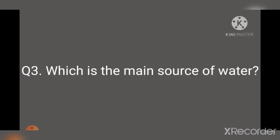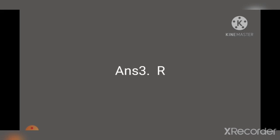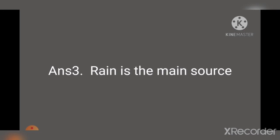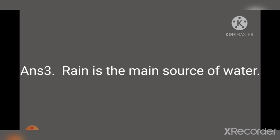Question number 3: Which is the main source of water? हमें कहाँ से mainly पानी मिलता है? This is the easiest answer. Answer number 3 is: Rain — R-A-I-N. Rain is the main source of water. You only need to remember the spelling R-A-I-N. Rain is the main source of water.